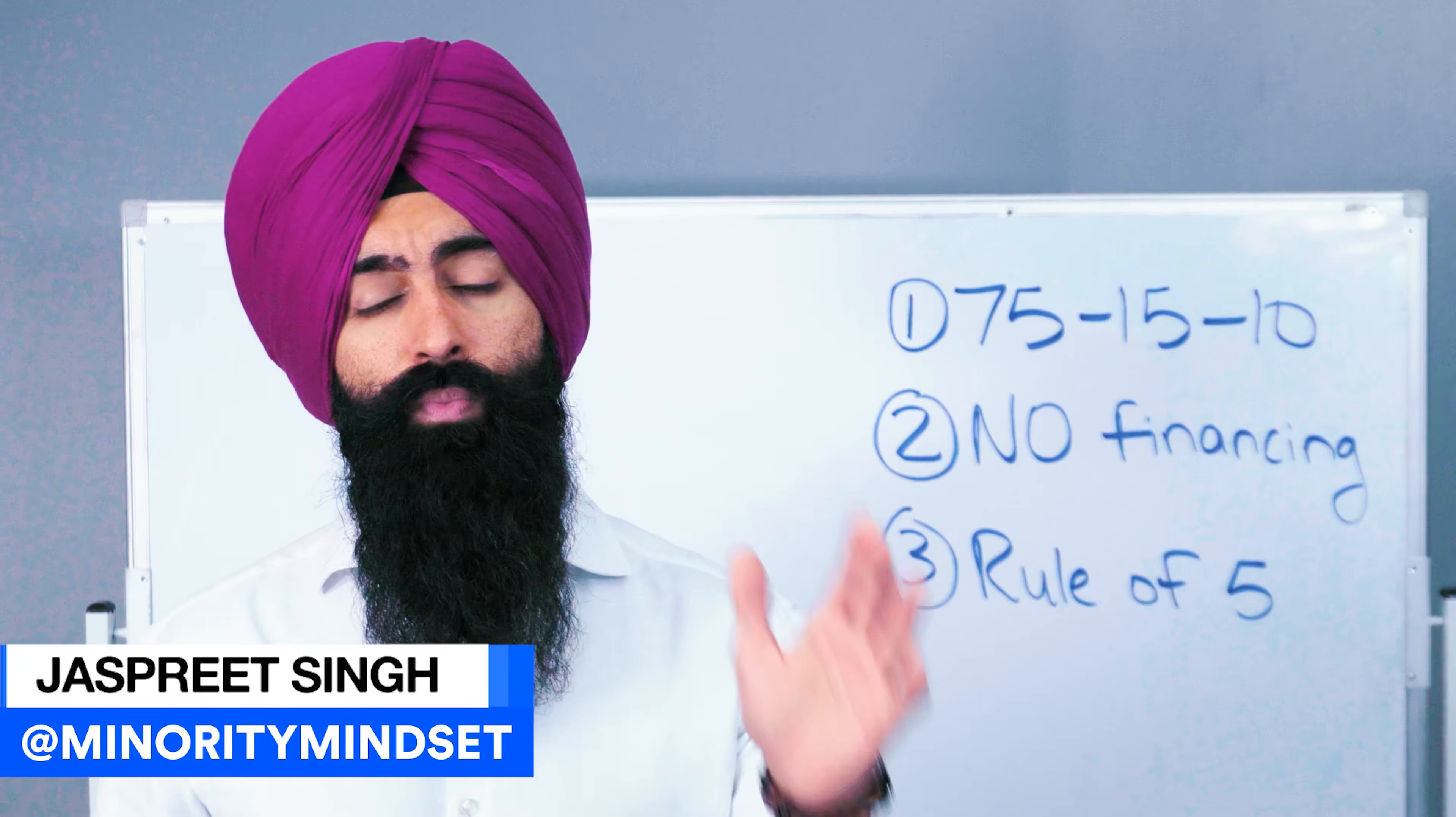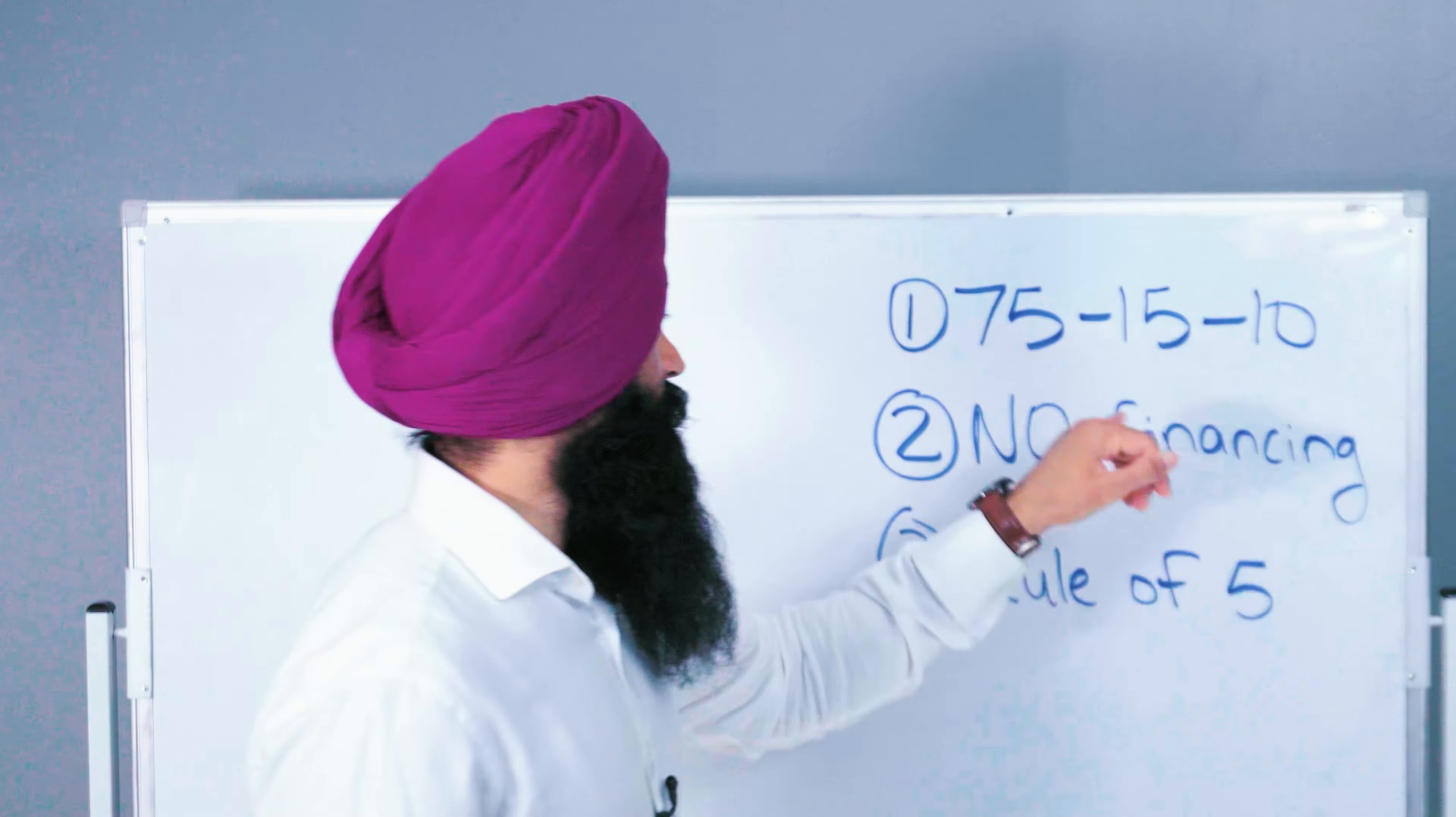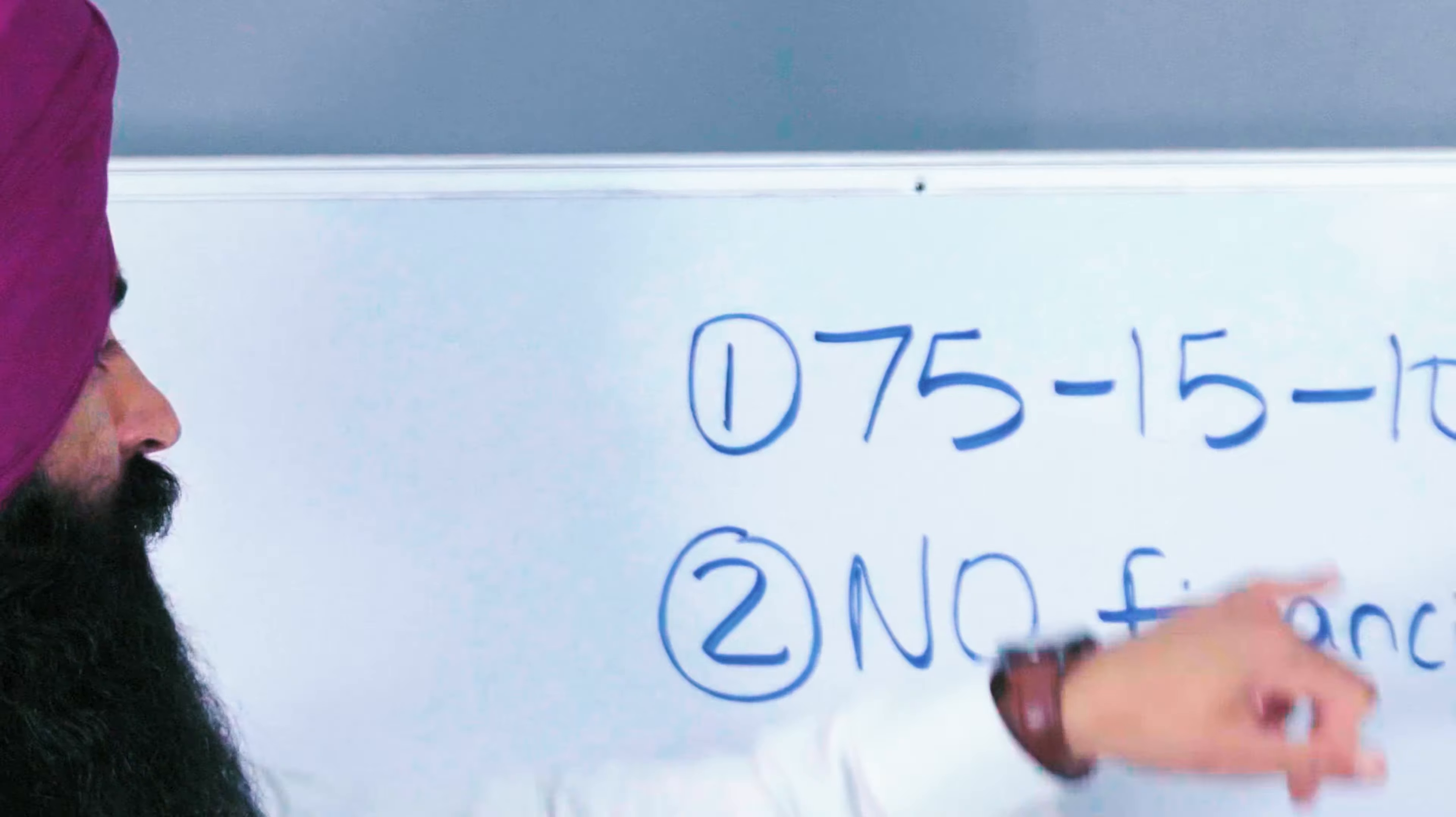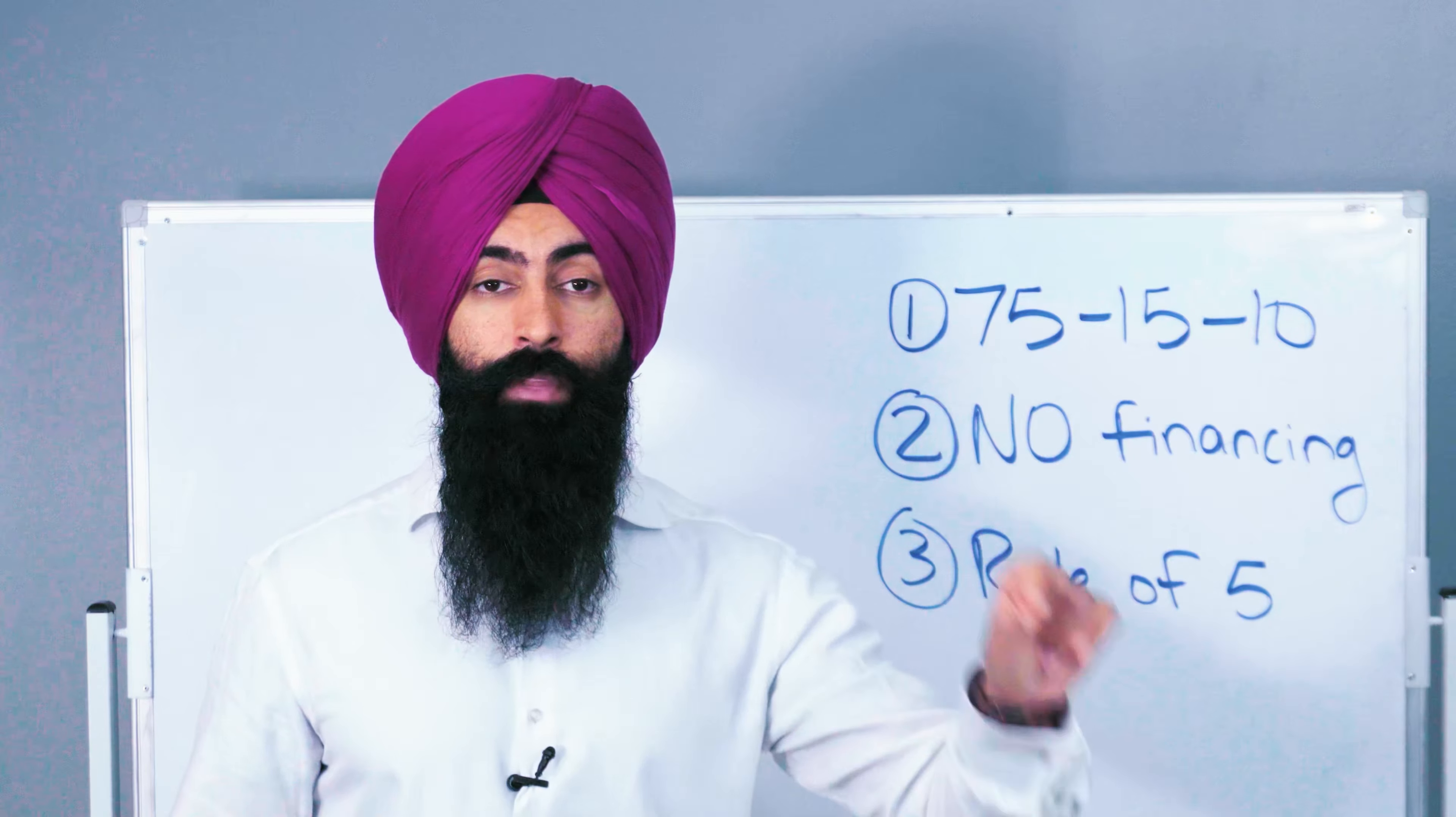This is the very easy way to get started, which says for every dollar that you earn from here on out, 75 cents is the maximum that you can spend, 15 cents is the minimum that you invest, 10 cents is the minimum that you save.